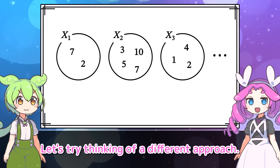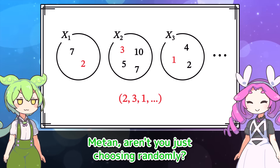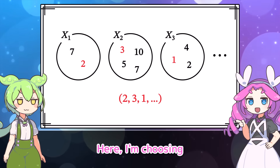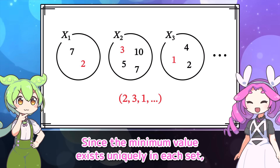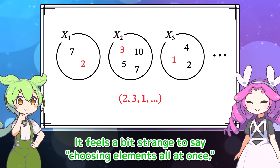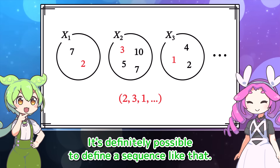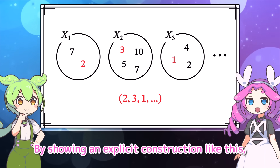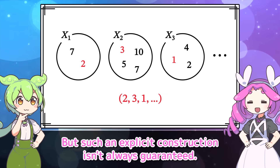Let's try thinking of a different approach. How about choosing elements this way? Aren't you just choosing randomly? No, I'm following a proper rule. I'm choosing the minimum value from each set. Since the minimum value exists uniquely in each set, we can choose elements all at once using this method. We're just defining the nth value as the minimum of the nth set. By showing an explicit construction like this, we can show the existence of a sequence made by choosing elements from each set.